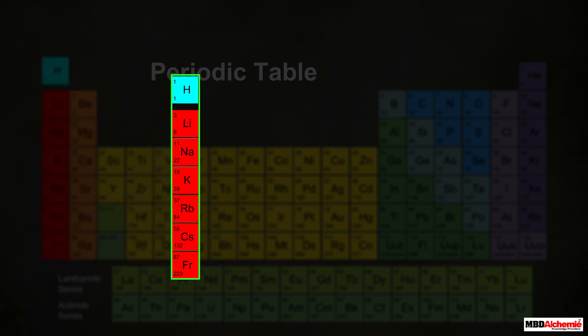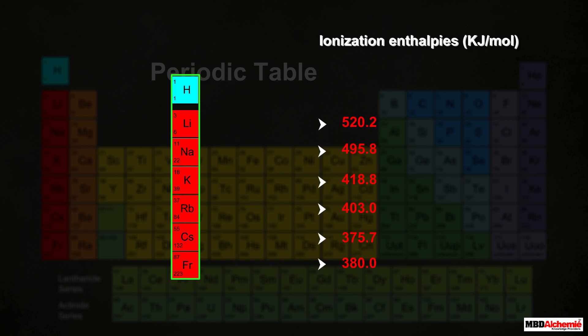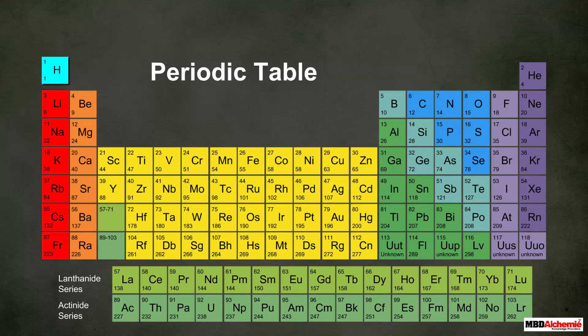Another difference is in the ionization enthalpy of alkali metals and hydrogen. The ionization enthalpy of all alkali metals lies between approximately 400 kJ/mol to 520 kJ/mol, whereas the ionization enthalpy of hydrogen is 1312 kJ/mol, which is much higher than that of alkali metals. Due to these dissimilarities, hydrogen is not placed with the alkali metals in Group 1.